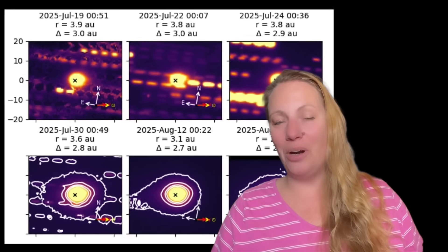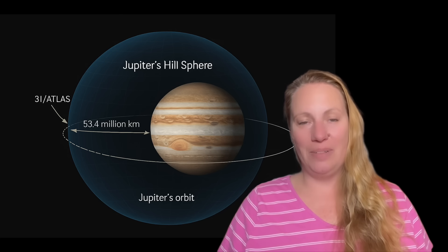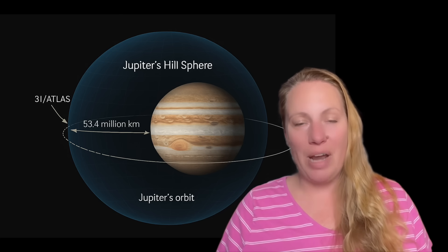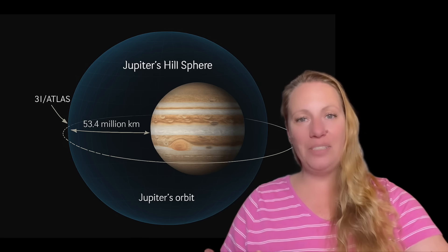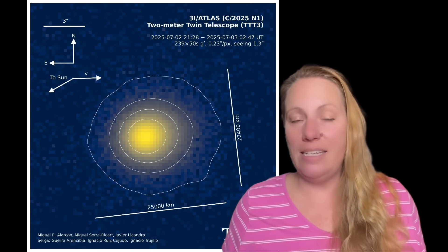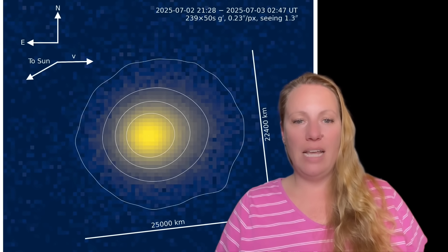3i atlas changed the course in perihelion right towards Jupiter into Jupiter's hill radius. What's the probability for that? Well, all the calculations in this video, I can tell you it's zero. So it's very, very strange.